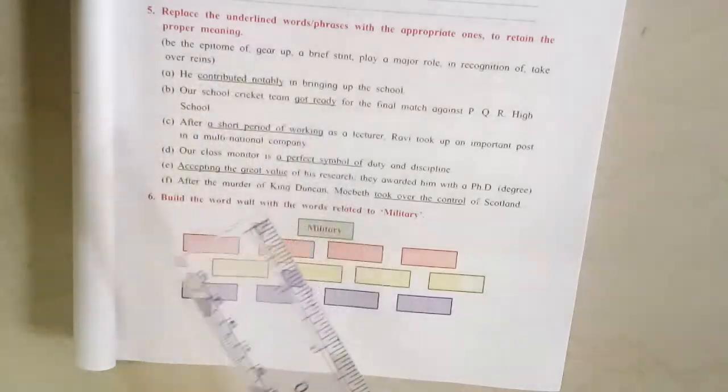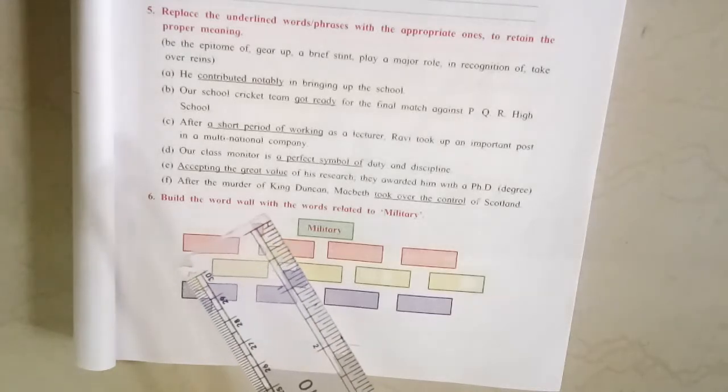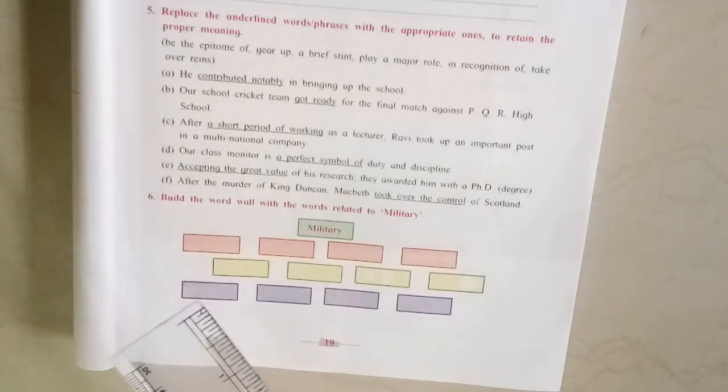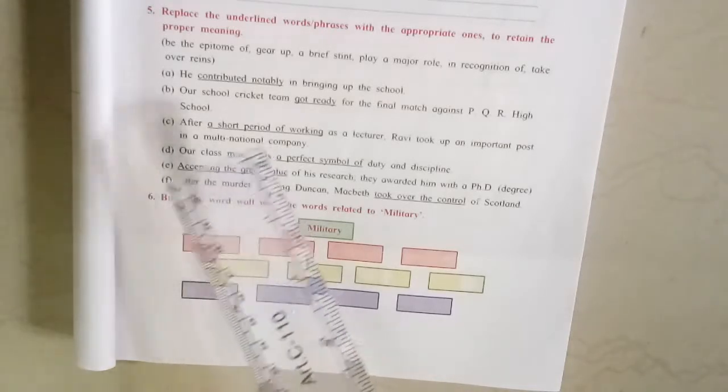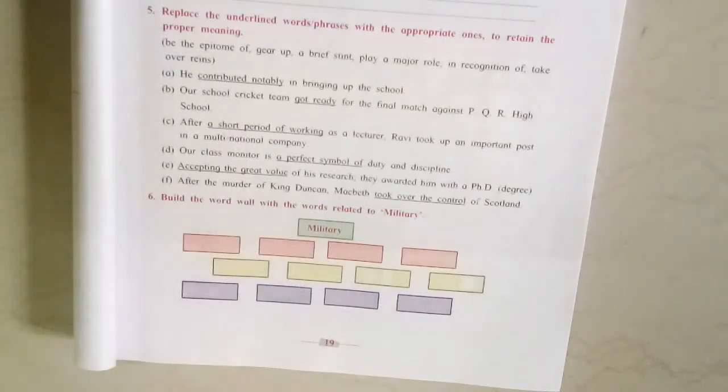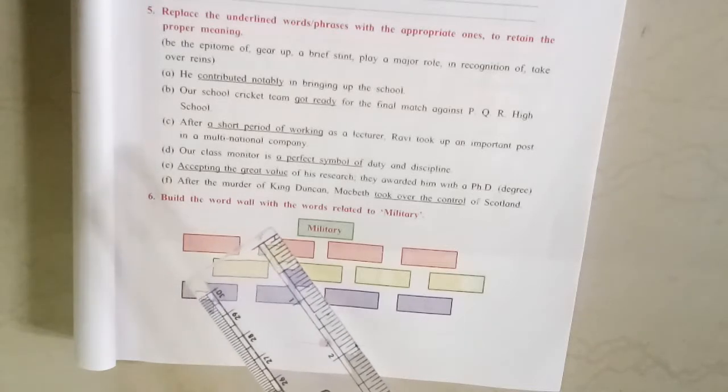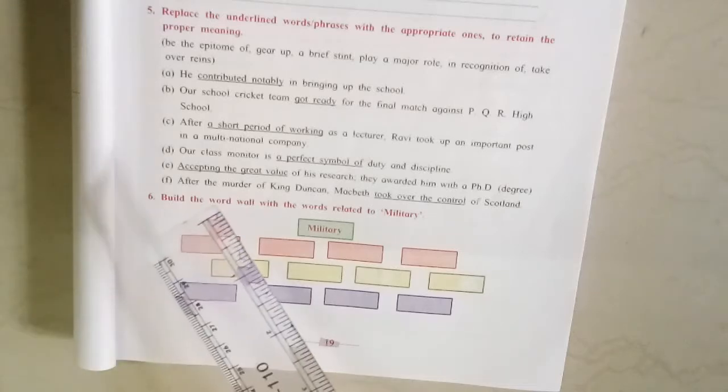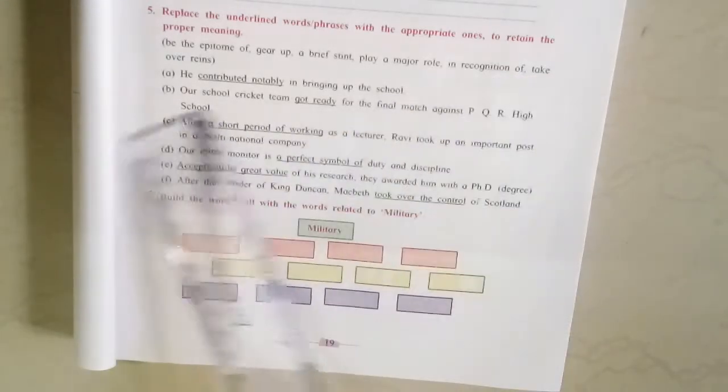Next: After a short period of working as a lecturer, Ravi took up an important post in a multinational company. A short period of working means a brief stint. Next: Our class monitor is a perfect symbol of duty and discipline. Perfect symbol of means the epitome of. Next: Accepting the great value of his research, they awarded him with PhD degree. Accepting the great value means in recognition. After the murder of King Duncan, Macbeth took over the control of Scotland. Took over the control means took over reins, that last option.